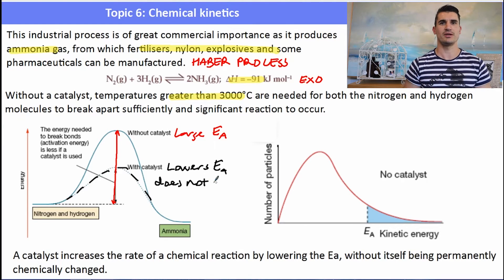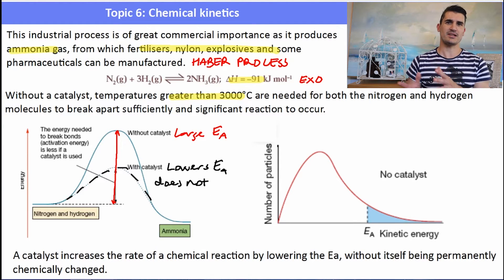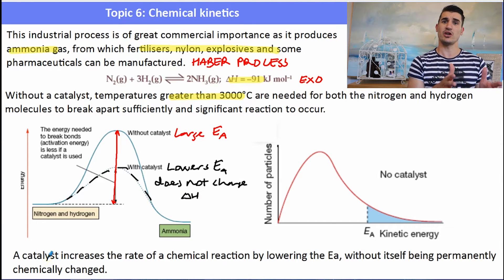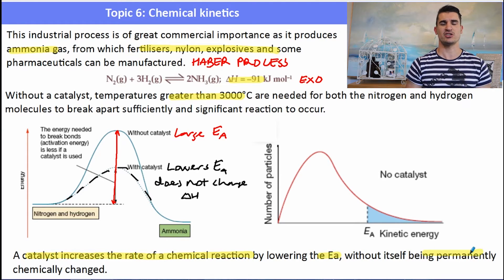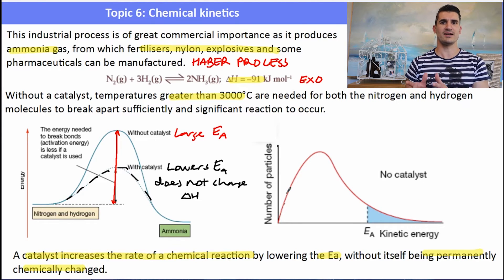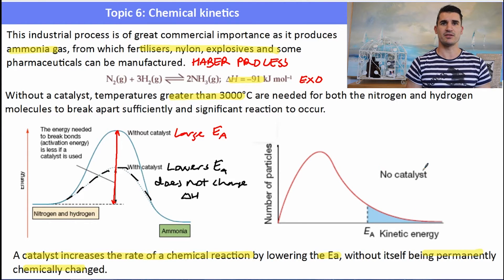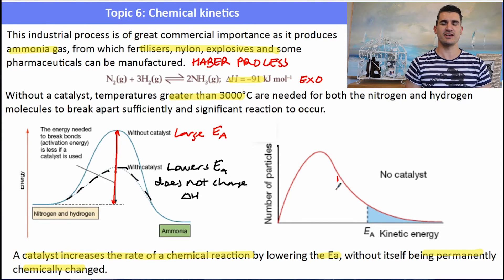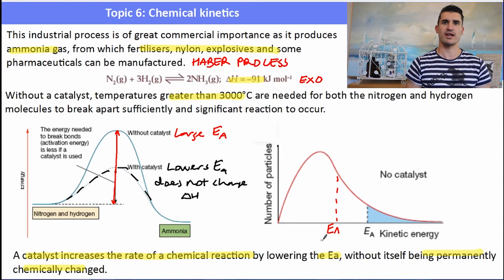Here's the Maxwell-Boltzmann distribution with the activation energy shown without a catalyst. When we add the catalyst, we don't shift the graph — we simply lower the activation energy. With the lower activation energy, there is a significantly greater number of particles with energy above it, and the area under the graph beyond that point is greatly increased, meaning a much faster reaction rate with a catalyst than without.